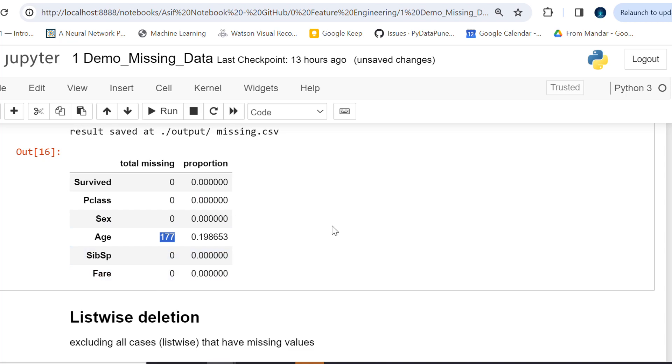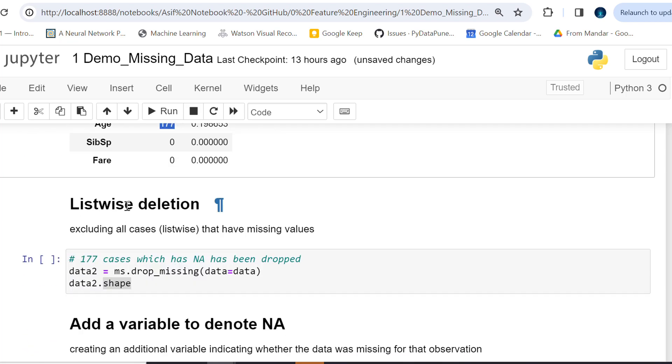I can also do listwise deletion. The very simple thing I can do where I don't have any data is simply drop them, right? Wherever I have any NaN, I can drop those fields. For that I'm using drop_missing. Let me go to drop_missing and see what we've written here.